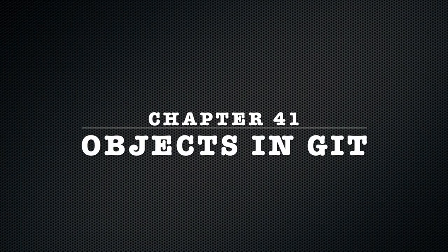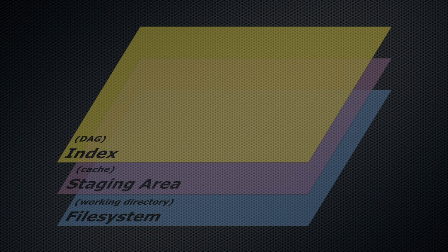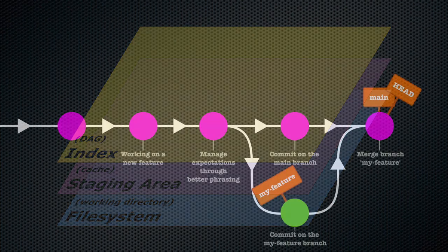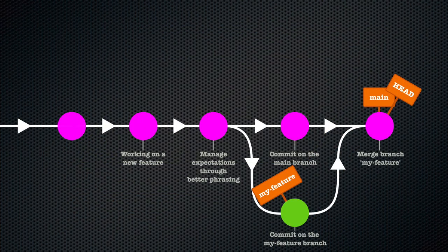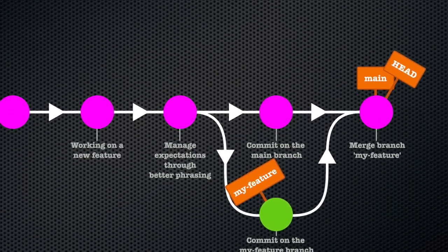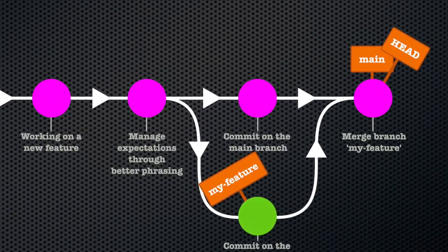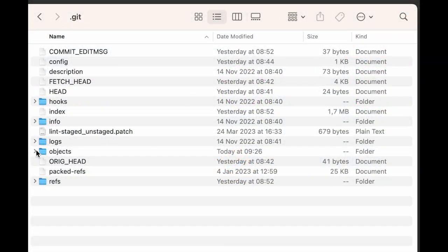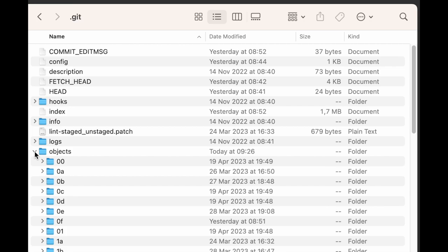Chapter 41: Objects in Git. We've talked about the DAG in Git and how various commits are linked together, but we have not really delved into how Git keeps track of things under the hood. In other words, how is all this information stored in the .git folder?